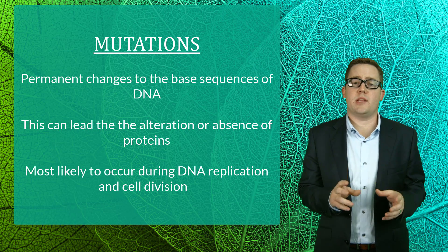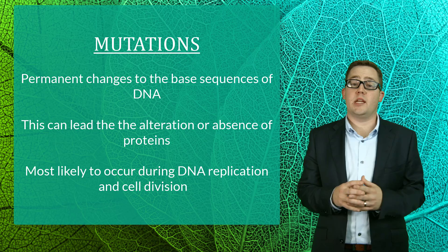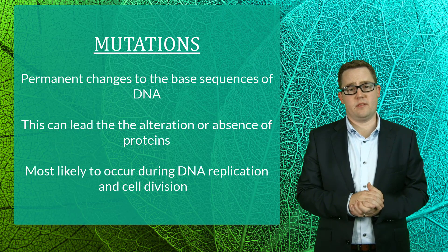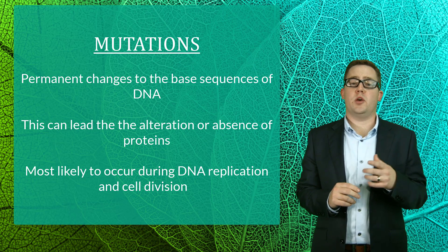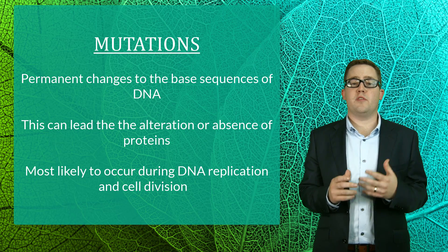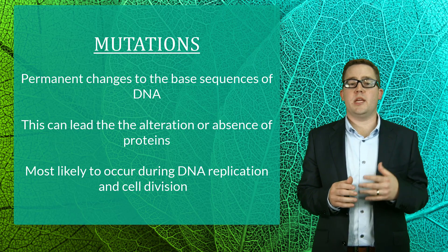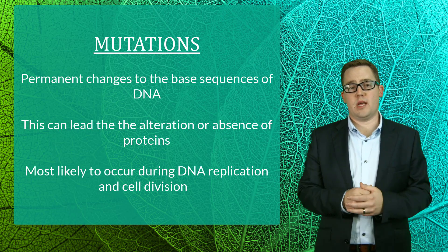If you've watched our protein synthesis video, then you'll understand that DNA contains genes, and that these genes code for the production of proteins. Mutations are permanent changes to the actual sequence of bases within genes, and these changes can lead to the alteration or even absence of proteins. These mutations are most likely to occur during DNA replication, but can also occur during cell division. This increase in likelihood during replication is due to the fact that the DNA strands are unwound and the bases are exposed and therefore vulnerable to damage.